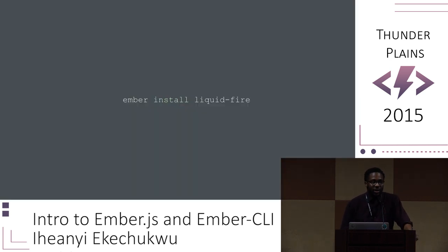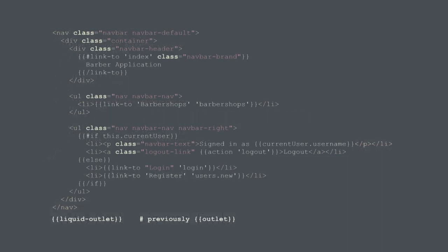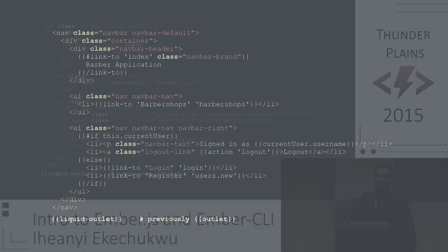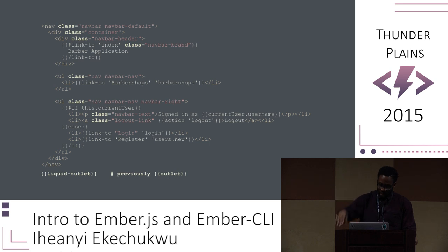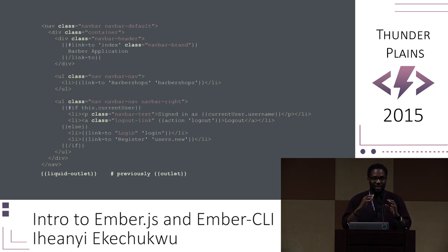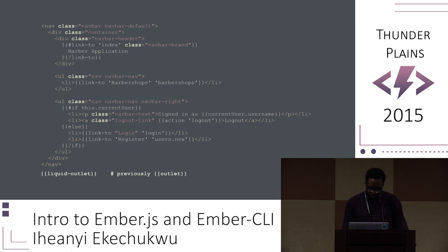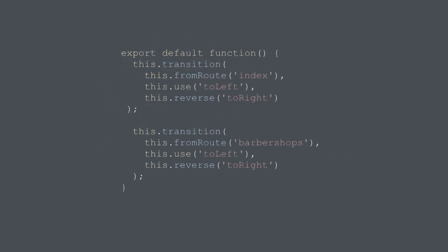First we're going to use Ember CLI to install Liquid Fire. Inside of your Ember application, a route is able to determine where to render its template given the parent template's outlet. With Liquid Fire, you have to change this outlet to a liquid outlet, which basically isolates and animates that part of the template into the next view. Then all you have to do is define a transitions.js file that tells Liquid Fire what transitions to use between the different routes.